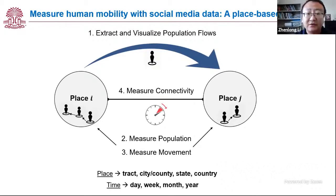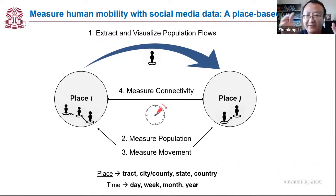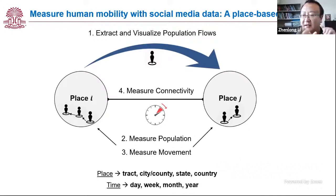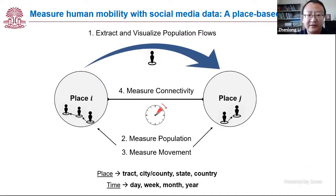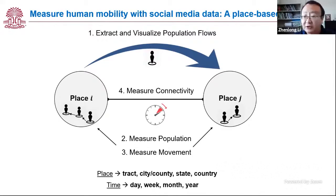If you look at this diagram, we have different levels of places — county, state, country — different levels. Then we have population moving in each place. You can think about social media users, like Twitter users.